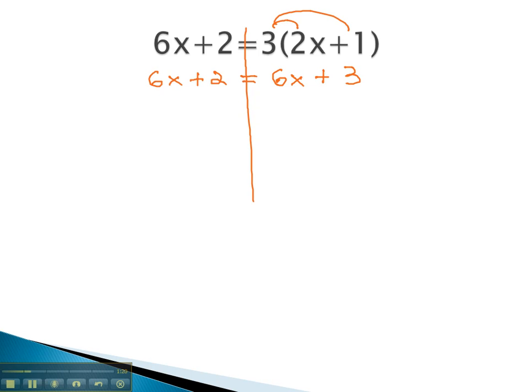This would give us 6x plus 2 equals 3 times 2 is 6x, plus 3 times 1 is 3. At this point, we like to get the variable all on one side. We can get rid of 6 positive x's with 6 negative x's, and subtracting 6x on both sides of the equation. Notice the 6x's subtract out of the left, leaving just 2, equals 6x minus 6x subtracts out, leaving just the 3.